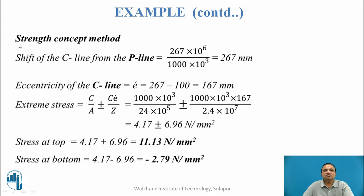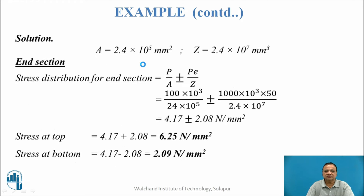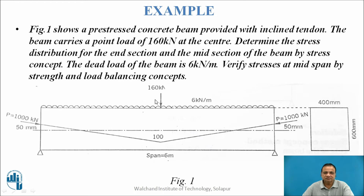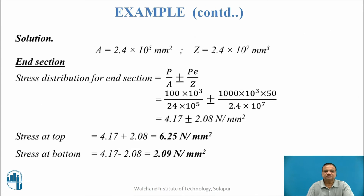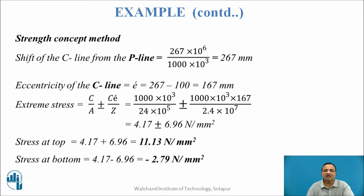Now let us solve the same example by the strength concept for the mid-span section. The shift of the C-line from the P-line is found by M divided by P (bending moment divided by pre-stressing force), which works out to 267 mm.